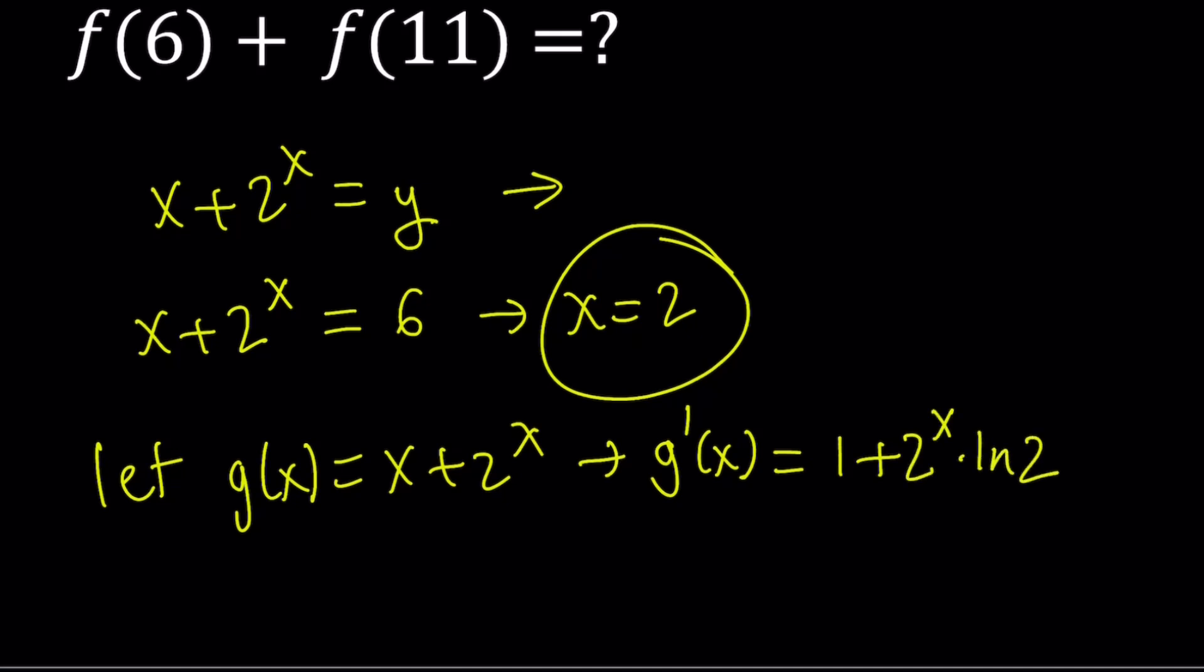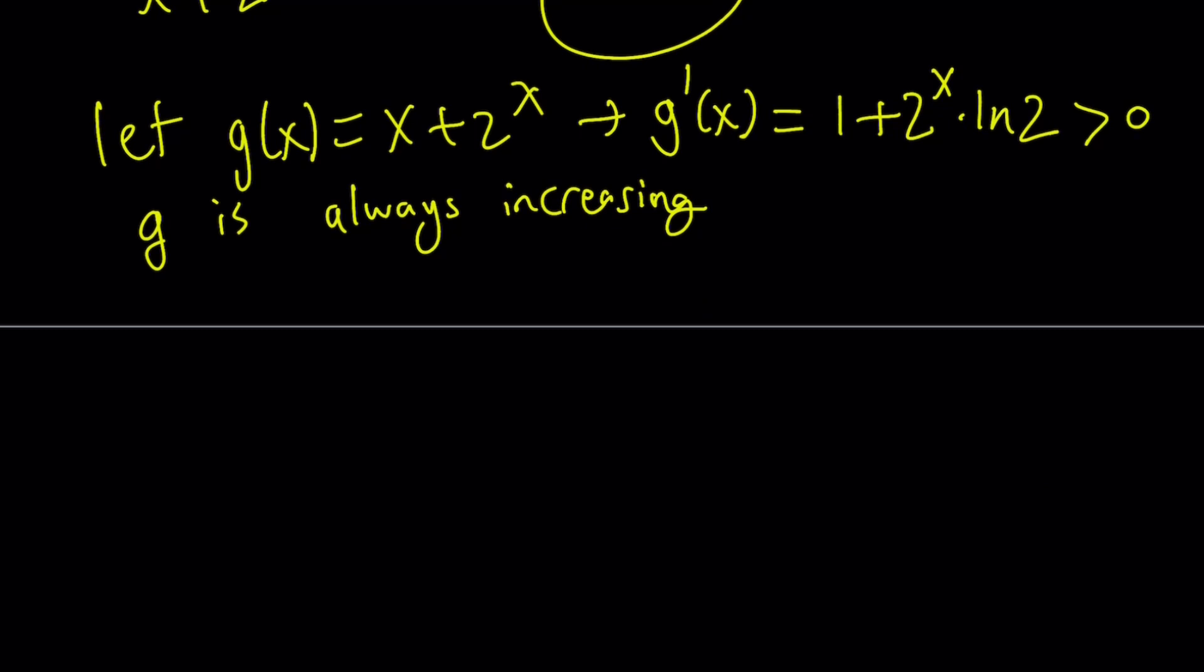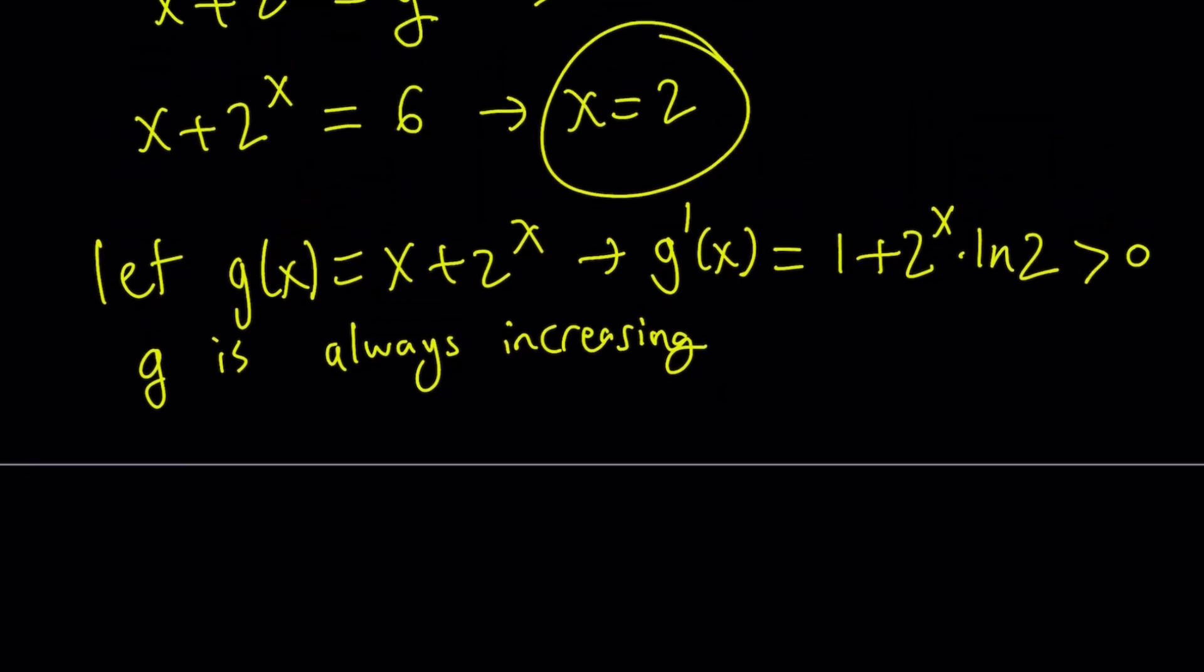Now, 2 is greater than 1, so ln(2) is positive. 2^x is always positive, so this is a positive quantity. What does it mean when the derivative of a function is always positive? It means g is always increasing. And I'll show you the graph at the end. So g is always increasing, which means it's only going to intersect the horizontal line y = 6 at one point, and that happens to be x = 2 in this case.